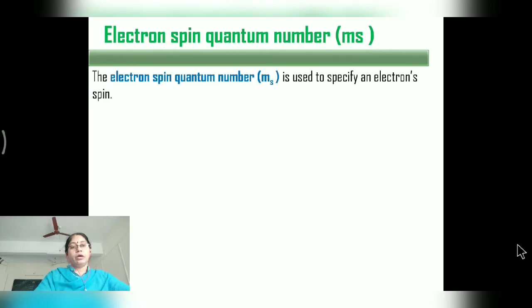Now let us look at the fourth quantum number — the Electron Spin Quantum Number. It is used to specify the electron spin.